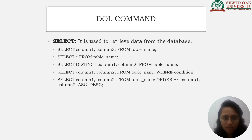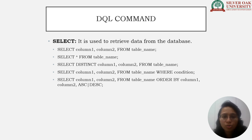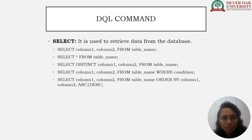The DQL command SELECT is used to retrieve data from the database. Syntax examples: SELECT column1, column2 FROM table_name; SELECT * FROM table_name to select all data; SELECT DISTINCT column1, column2 FROM table_name for distinct values; SELECT column1, column2 FROM table_name WHERE condition to apply a filter; and SELECT column1, column2 FROM table_name ORDER BY column1, column2 ASC/DESC to sort the data.